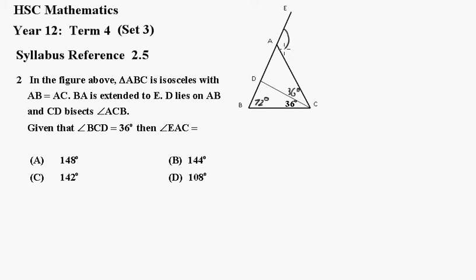Now this is the exterior angle EAC, and that must be equal to the sum of these two, and that gives a total of 144 degrees, which of course is B.